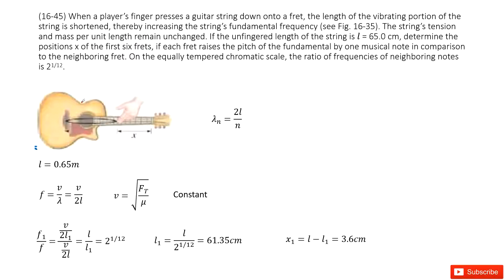And it also tells us the tension and the linear density will not change. And initially this unfingered length of string is given L. We need to determine the position x for the first six frets. So how can we do that?